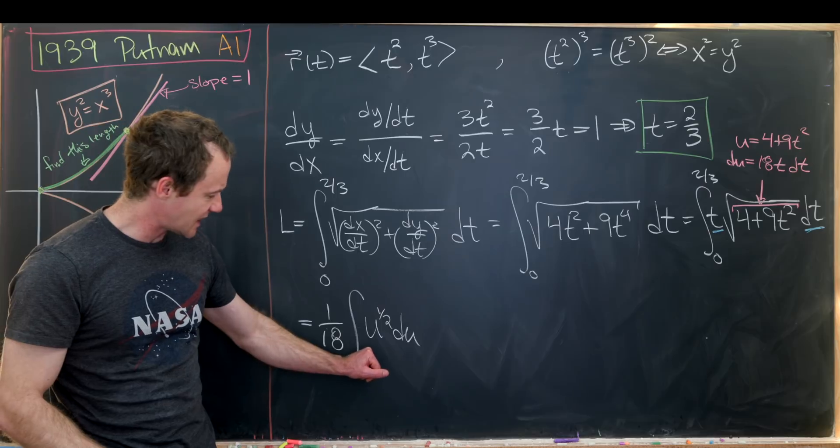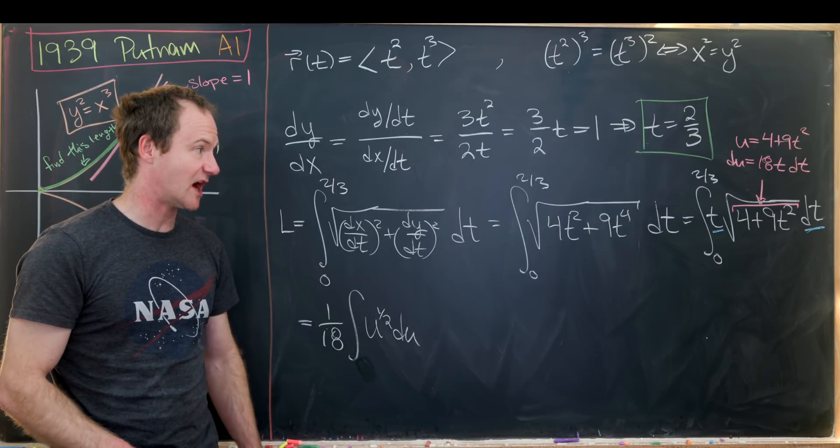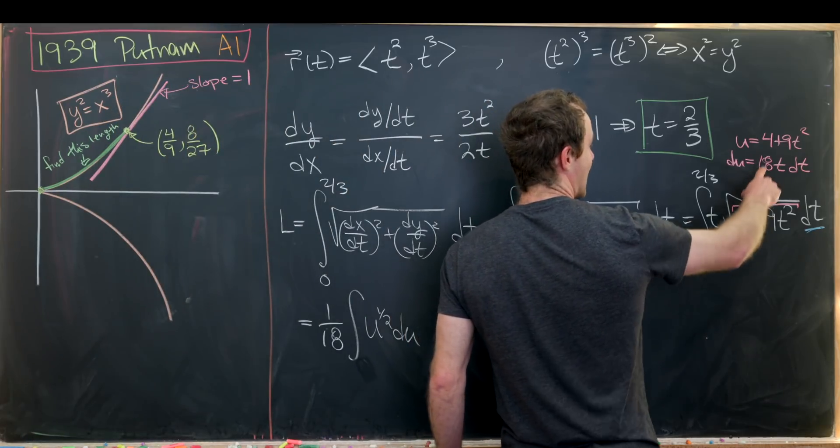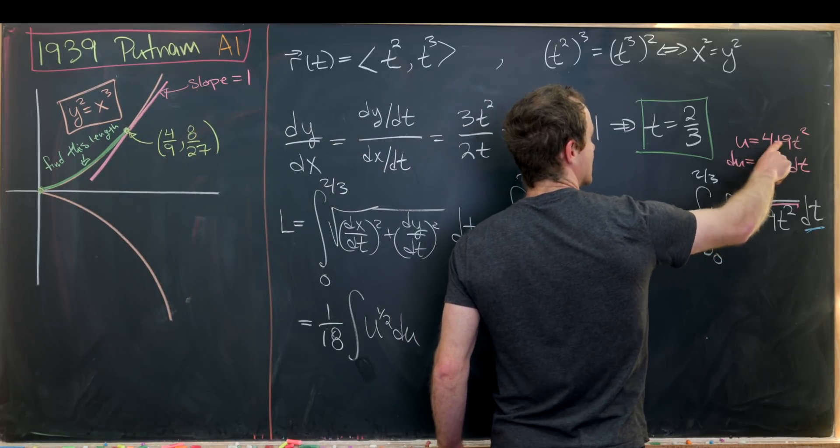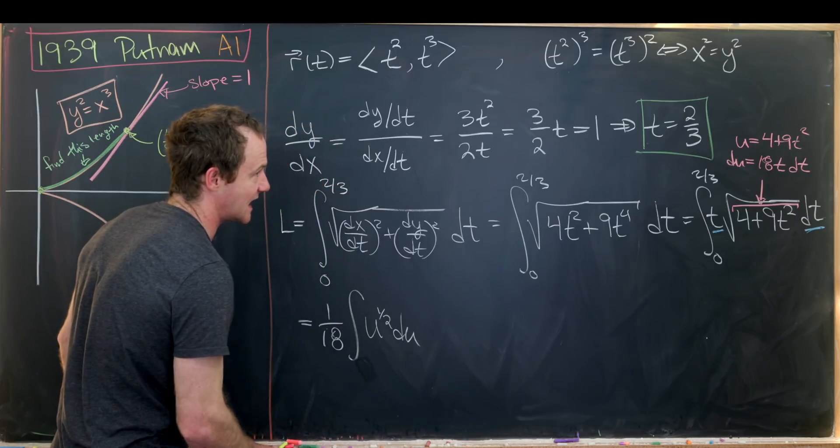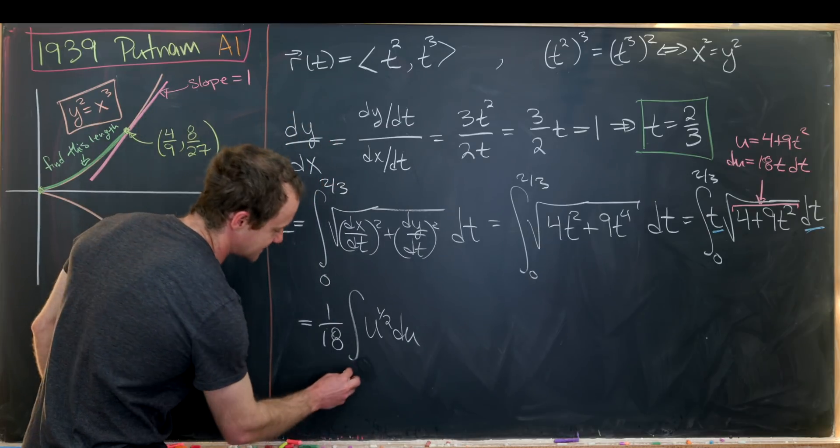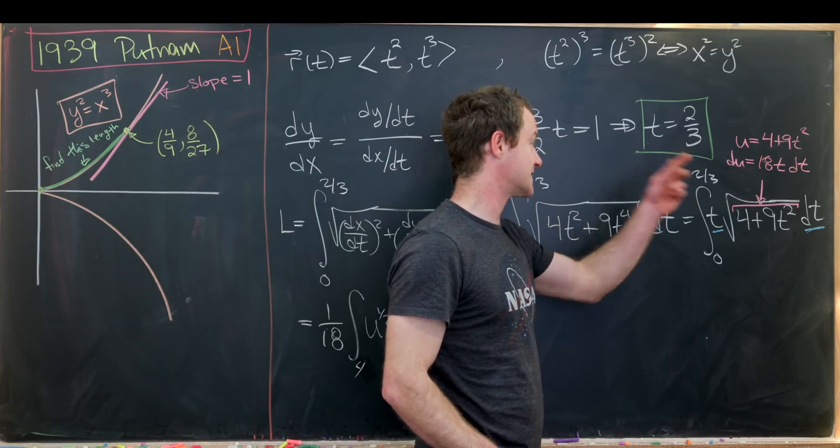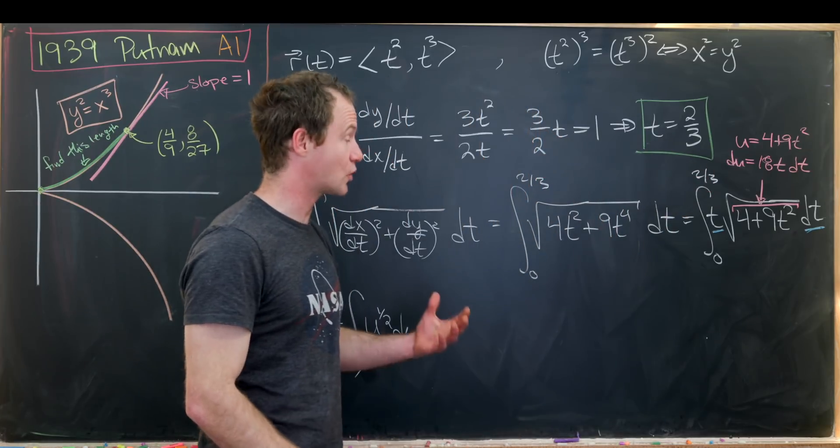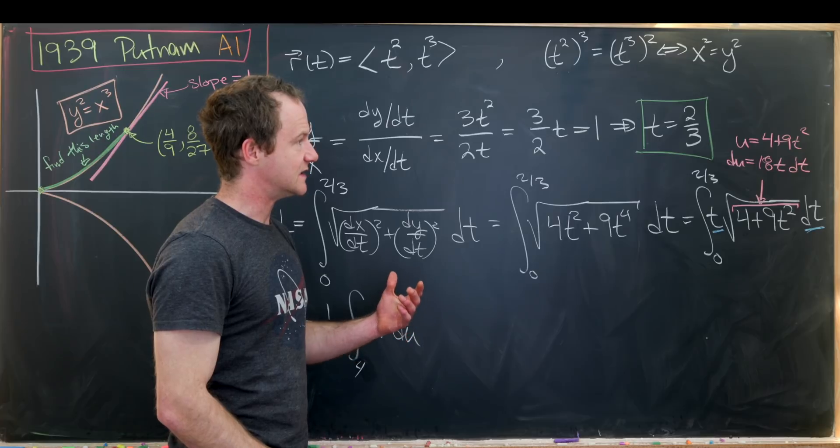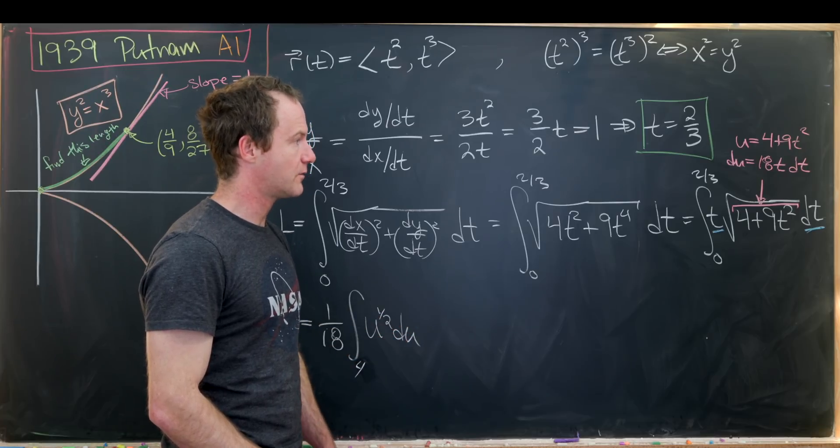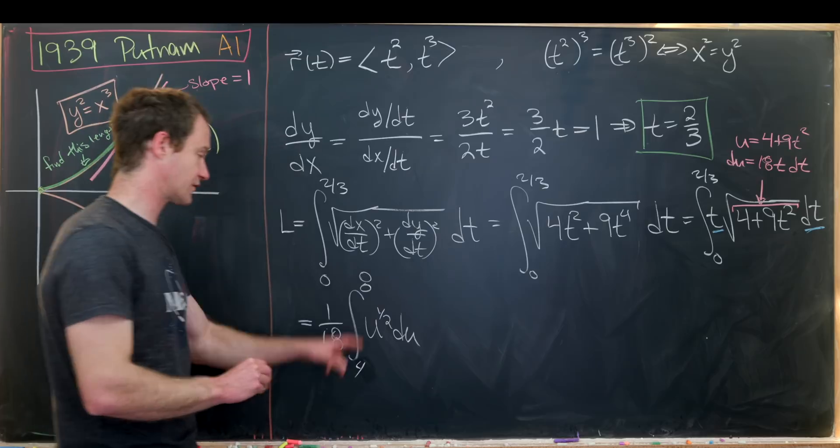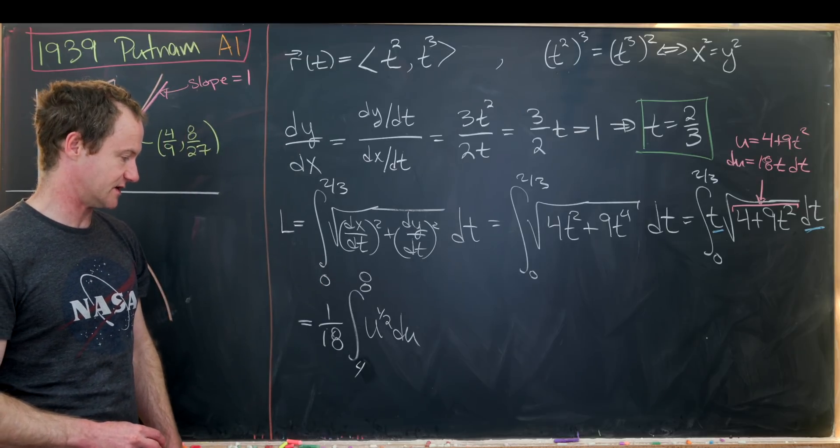Actually, I made a mistake here. This lower bound of integration should not be 0. It should be 0 evaluated into this value of u. Notice that's going to give us 4 plus 9 times 0, which is 4. Now let's see what we get: 4 plus 9 times 2/3 squared. That'll give us 4 plus 4, which is 8. So now we've got the integral from 4 to 8.